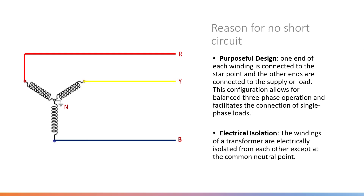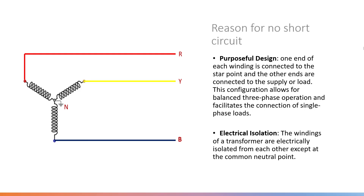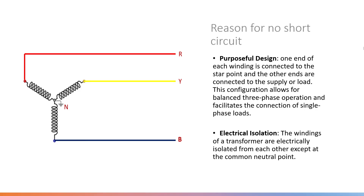Another reason is electrical isolation. The windings of a transformer are electrically isolated from each other, except at the common neutral point. Except for the neutral point, all windings are insulated — we can say all windings are electrically isolated.